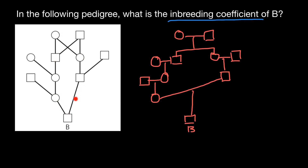Here is one loop — how the same allele can come from both sides: the mother's side and the father's side. If you don't have a loop, we cannot calculate the inbreeding coefficient. Here is another loop. Person B can also get two identical alleles from both his mother's side and father's side through this ancestor. Only these two people can be common ancestors to person B from both his mother's side and father's side.